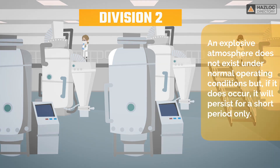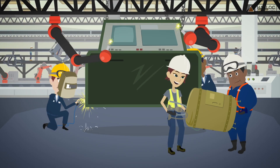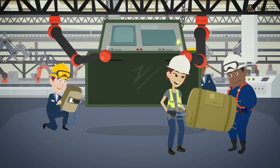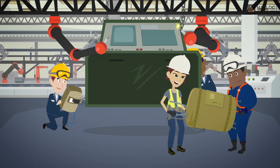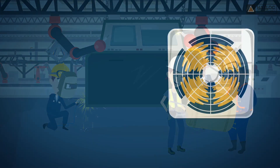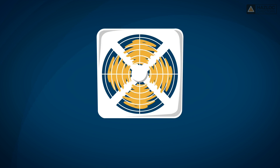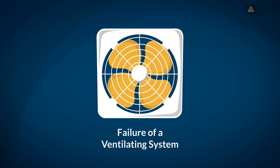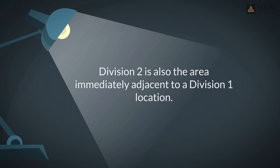A Division 2 area might be created during repair or maintenance activities, accidental rupture of a vessel or container, or failure of a ventilating system. Division 2 is also the area immediately adjacent to a Division 1 location.